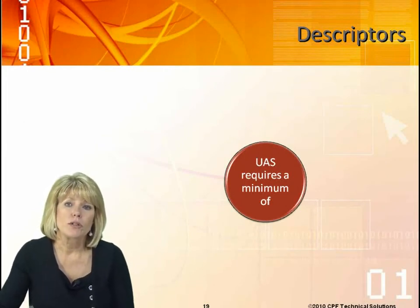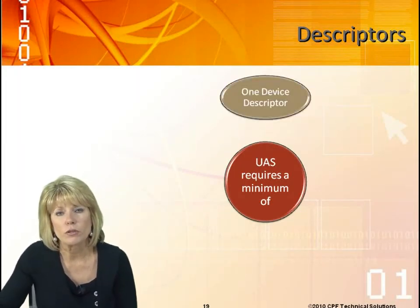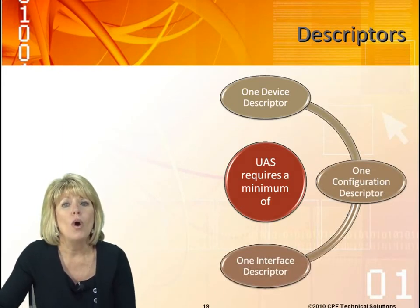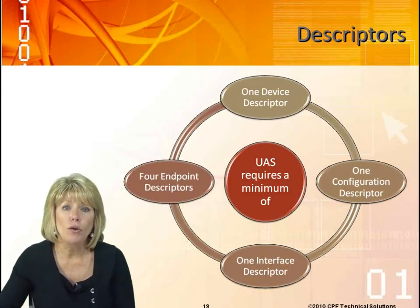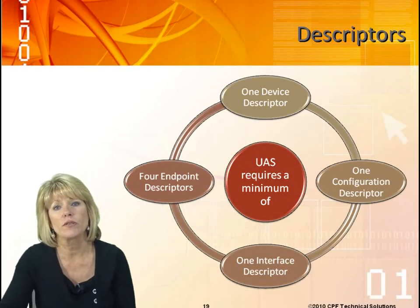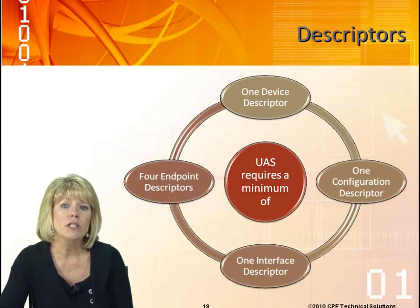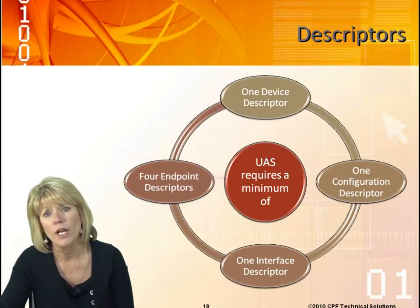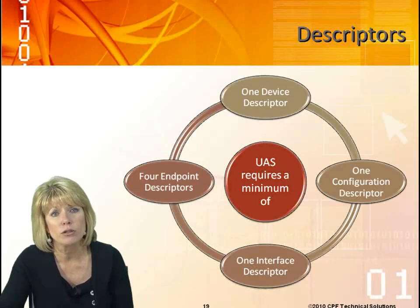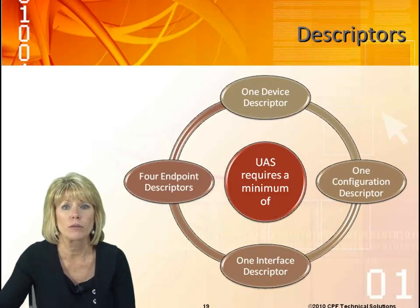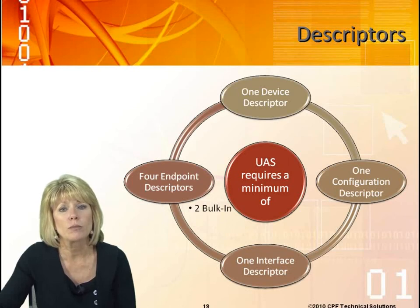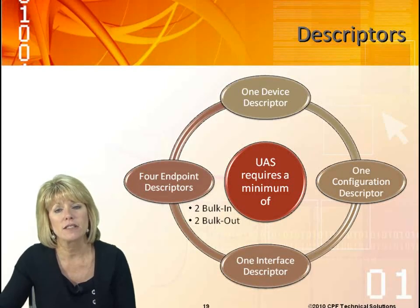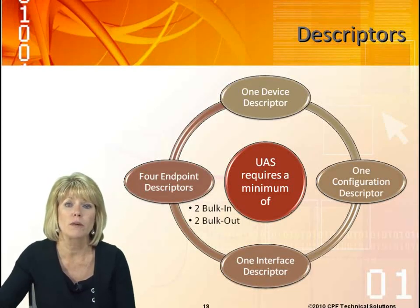Now regarding descriptors — UAS does require descriptors. Obviously you have one device descriptor, one configuration descriptor, one interface descriptor, but you have to have four endpoint descriptors. The UAS specification says you only need one interface descriptor, but you could have multiple interface descriptors. Each interface descriptor has to point to four endpoint descriptors — two bulk in and two bulk out — because we want to separate data, commands, and status for more efficiency to enable command queuing.